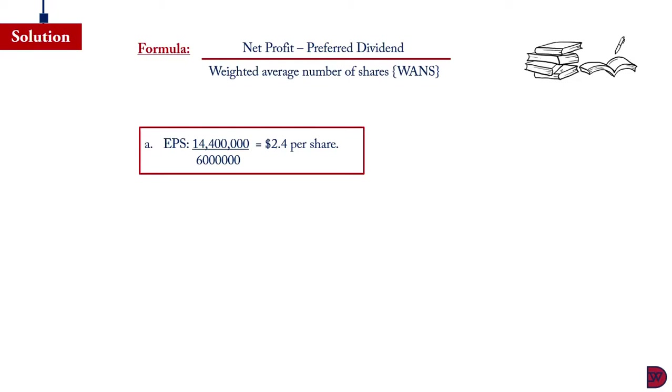The formula as we have already alluded to is net profit less preferred dividend divided by weighted average number of shares. The first assumption when there was no issue of shares during the year, the earnings per share will be $14.4 million, which is the net profit. There's no dividend paid to preference shareholders. We divided by the existing shares, which is 6 million, giving us an earning per share of $2.40.